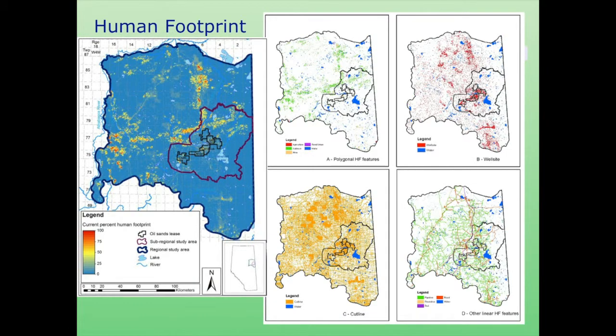It's also possible to use existing information to describe characteristics of the human footprint — the human development in the area. These are a set of maps: the first is for cut blocks, then well sites, then cut lines, and then other linear features. These maps are an exaggeration — you can't show cut lines at this scale at their actual size — but it gives you an idea of the dispersion of human footprints throughout the area.